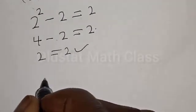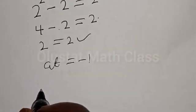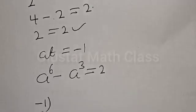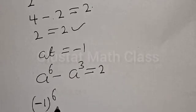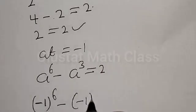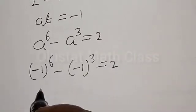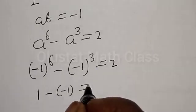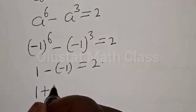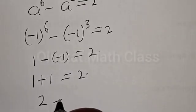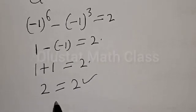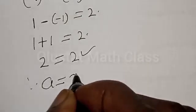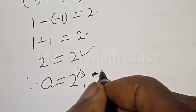Also let's check at A equal to minus 1. We have the original equation: A raised to power 6 minus A raised to power 3 must equal 2. Then we have minus 1 raised to power 6 minus minus 1 raised to power 3 must equal 2. Now minus 1 raised to power 6 is 1, and minus 1 raised to power 3 is minus 1. So 1 minus minus 1 equals 1 plus 1, which is 2. We satisfy the given equation at A equal to minus 1. Therefore our final answer is A equal to 2 raised to power 1 over 3, or A equal to minus 1.